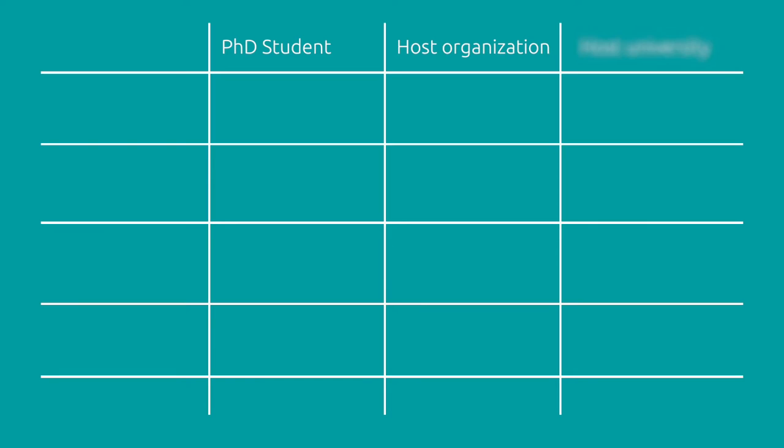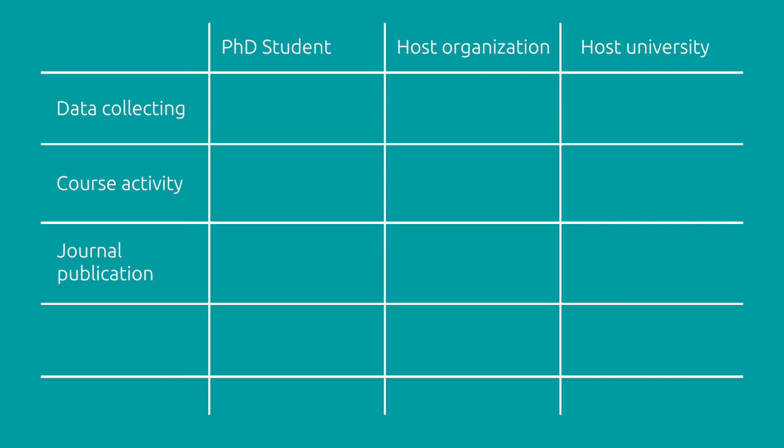You could first of all try to map your activities. I worked out a very simple tool to keep track of that. In the columns, you have you, your host organization, and your host university. In the rows, you have all the activities that you engage in — data collecting, course activity, journal publication, and so forth. The quadrants in the middle will tell you what value you have created for each stakeholder with each activity. This mapping will quickly show you if you have consistently over time deprioritized one stakeholder.